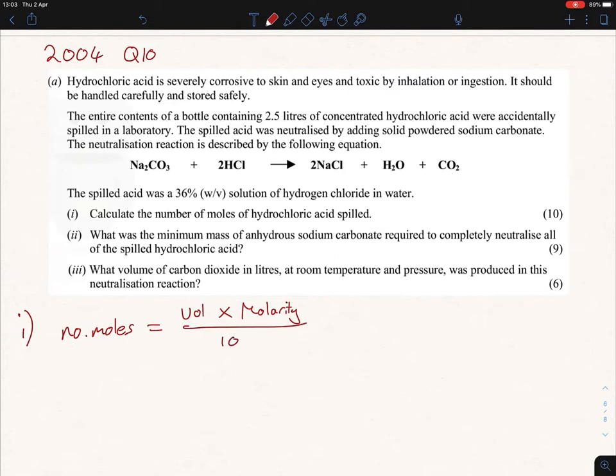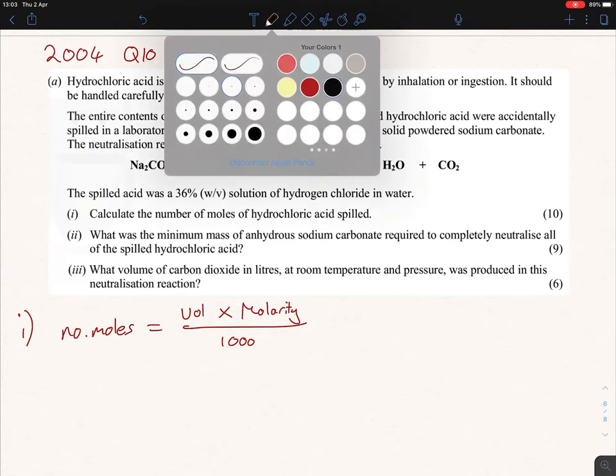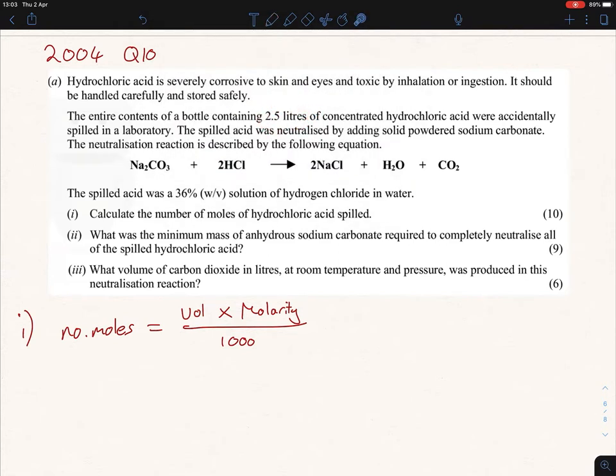Let's see what we have here. We actually do have the volume - we're told in the question that it's 2.5 liters. Now really important for this, the volume here has to be in centimeters cubed. So therefore it's going to be 2500 centimeters cubed times our molarity, which we don't know just yet, over a thousand. So there must be a way of figuring out the molarity. What does molarity mean? Molarity is mass per liter over the Mr.